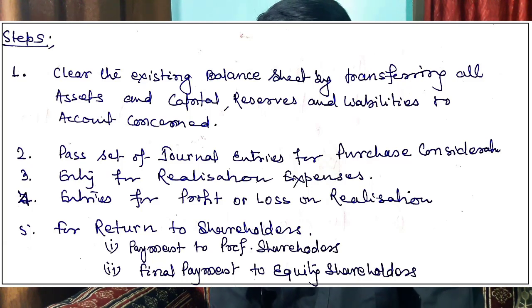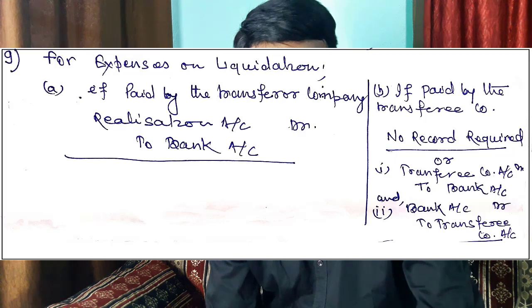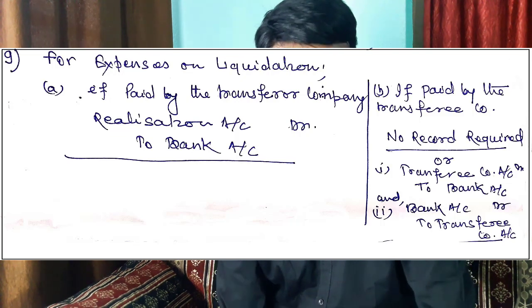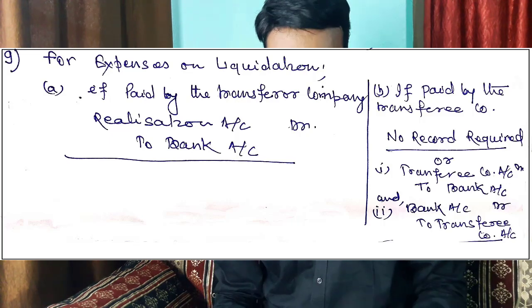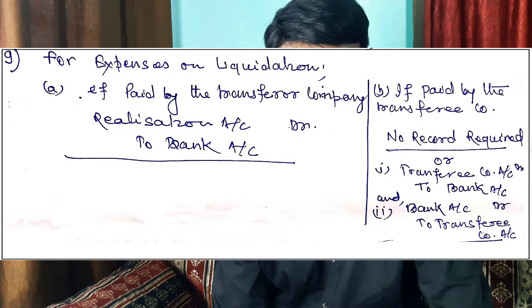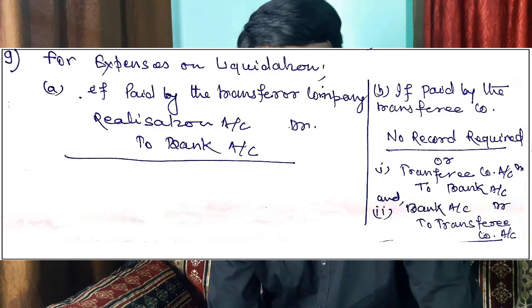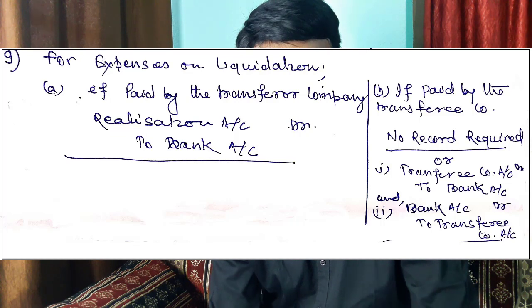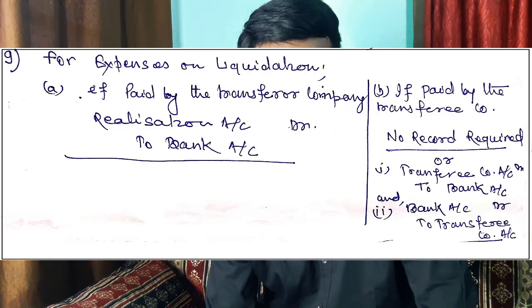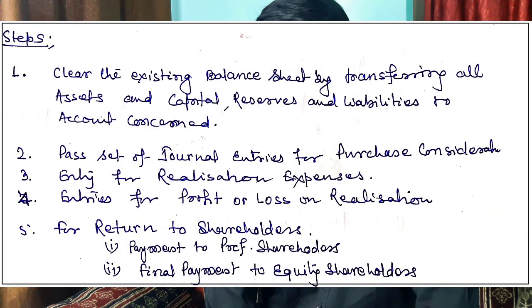Now step three, journal entry number nine: for expenses on liquidation. When winding up or merger/transfer occurs, there are expenses to close the company's affairs, called liquidation expenses or expenses on realization. Two conditions: if paid by the Transferor Company — Realization Account debit, to Bank Account. If paid by the Transferee Company — no record is required, no journal entry needs to be passed. Step three is clear.